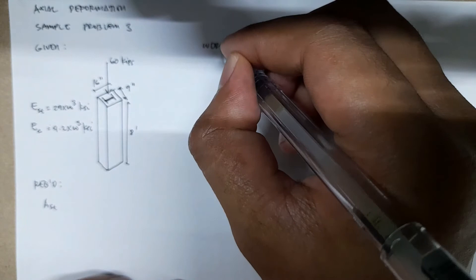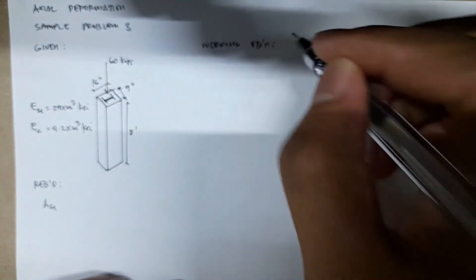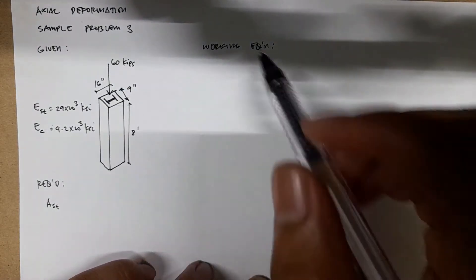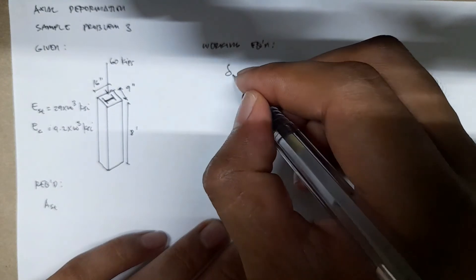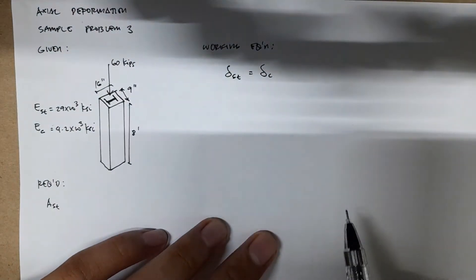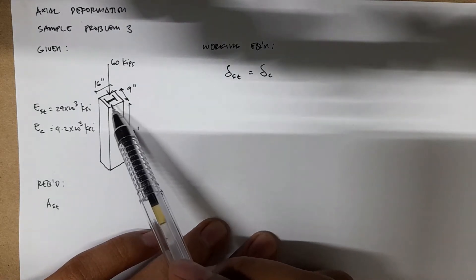Since we are asked to find Ast, our working equation is actually based on deformation. These two materials are treated as one, so the deformation of steel is equal to the deformation of concrete - how much the steel component deforms is equal to how much the concrete component deforms.